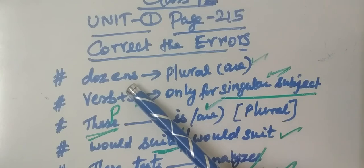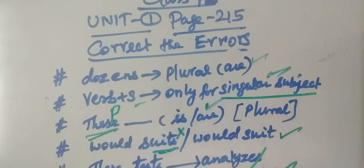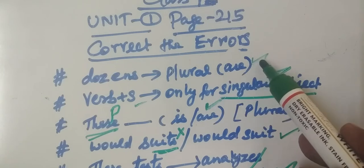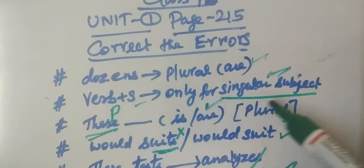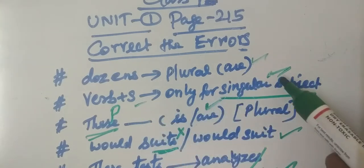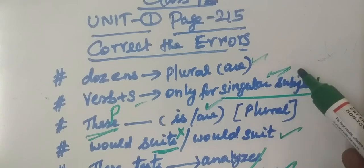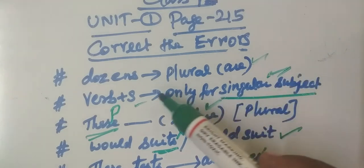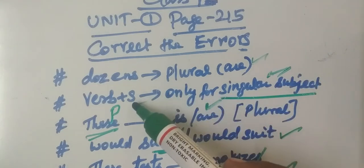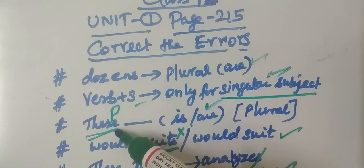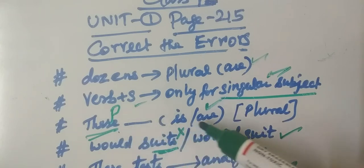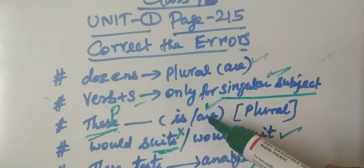Dozens — plural. Since it is plural form, you are using the base verb form without 's'. We use the structure verb plus 's' for singular — when the subject is singular. For plural subjects like 'dozens' and 'these', you use the base verb form.